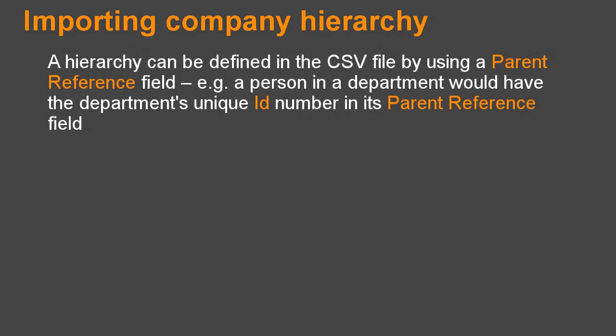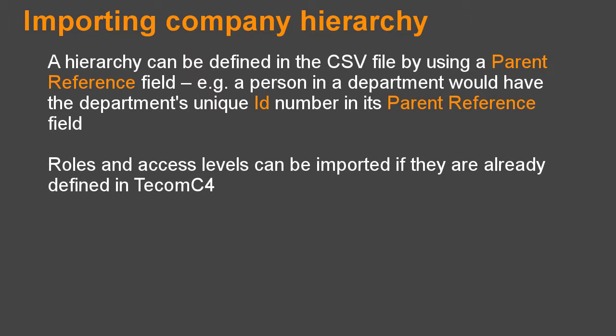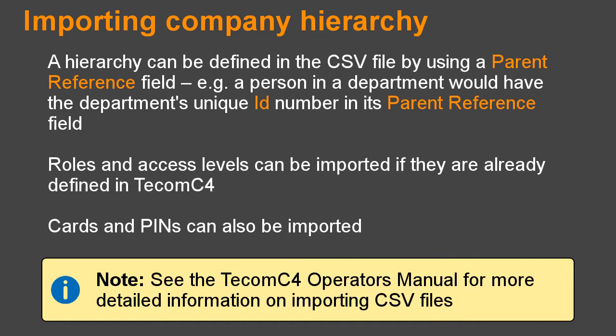A hierarchy can be defined in the CSV file by using a parent reference field — for example, a person in a department would have the department's unique ID number in its parent reference field. Roles and access levels can be imported if they are already defined in TCOM C4. Cards and pins can also be imported. See the TCOM C4 operator's manual for more detailed information on importing CSV files.